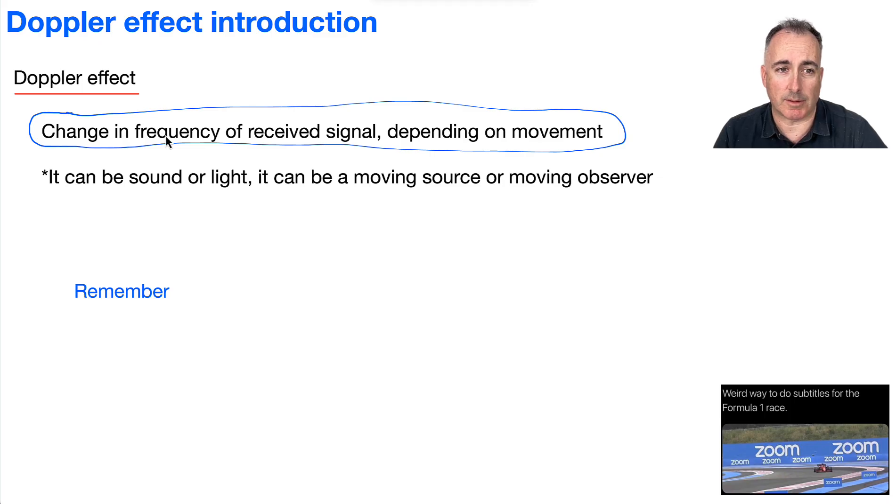It is a change in frequency of a received signal, and that depends on the movement. Some object is going to be moving, and this could be something emitting sound or something emitting light.